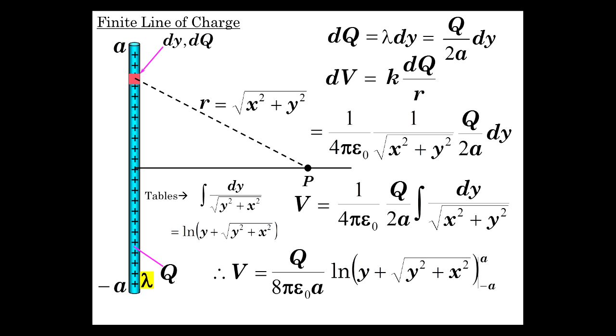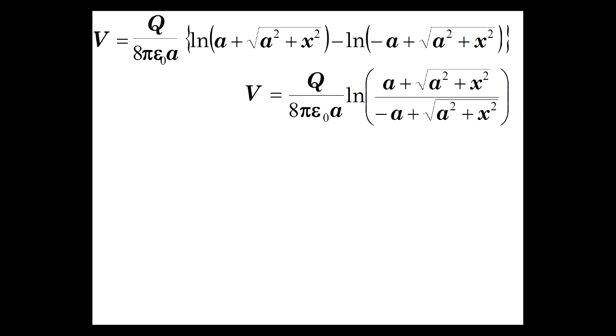Consolidating the constants, natural log of y plus square root of y squared plus x squared, from negative a to a. So V is Q over 8π epsilon_0 a. With the limits from negative a to a, we get this result, and that is one over the other.